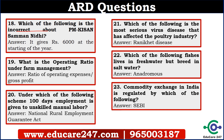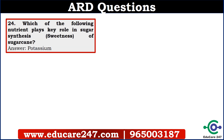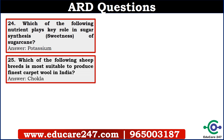The twenty-fourth question is: which of the following nutrient plays a key role in sugar synthesis — meaning sweetness of sugarcane? The answer is potassium. The twenty-fifth question is: which of the following sheep breed is most suitable to produce the finest carpet wool in India? The answer is Chokla — it is also a very simple question.